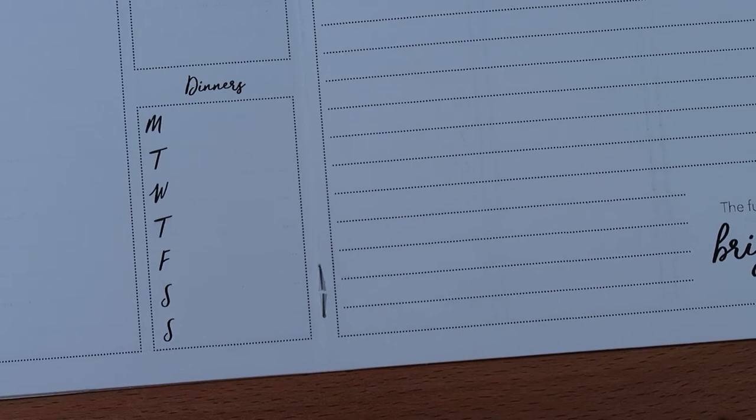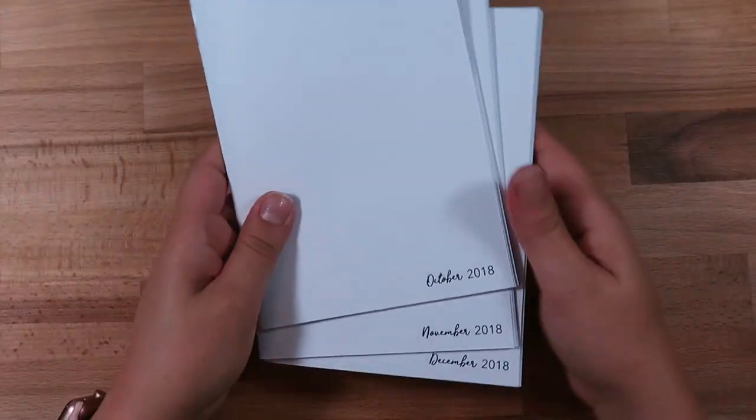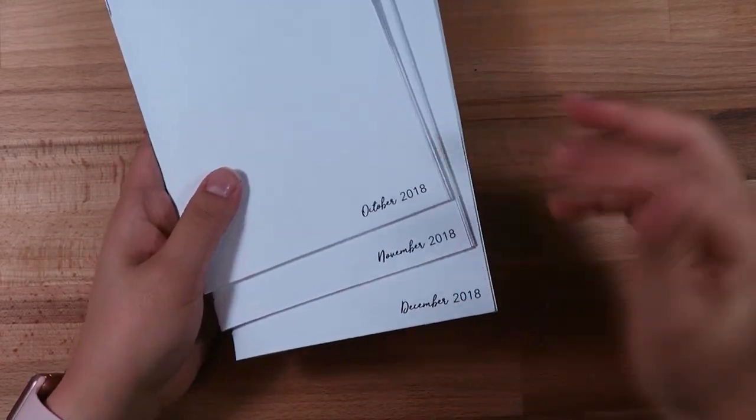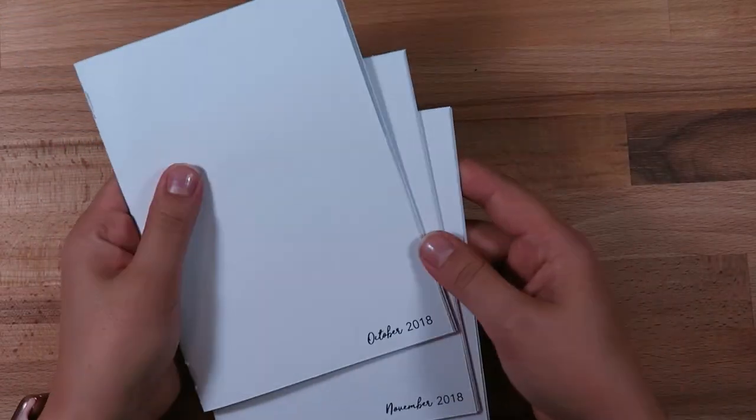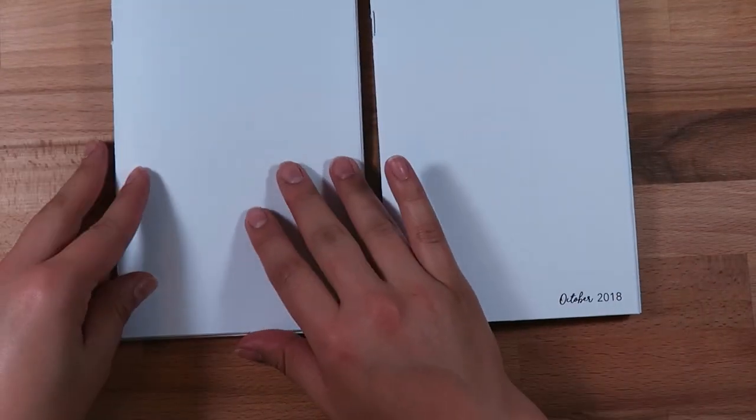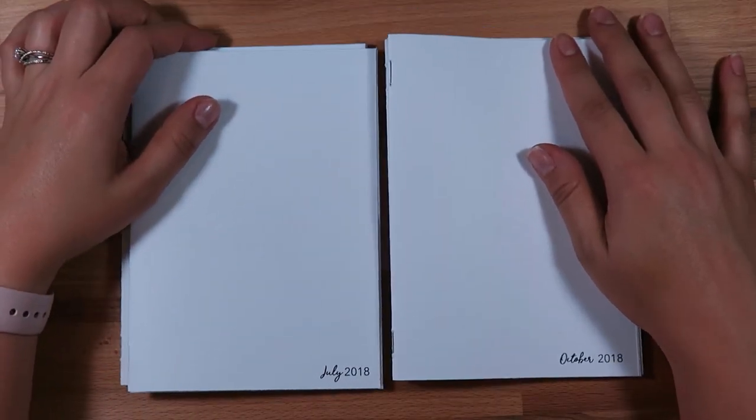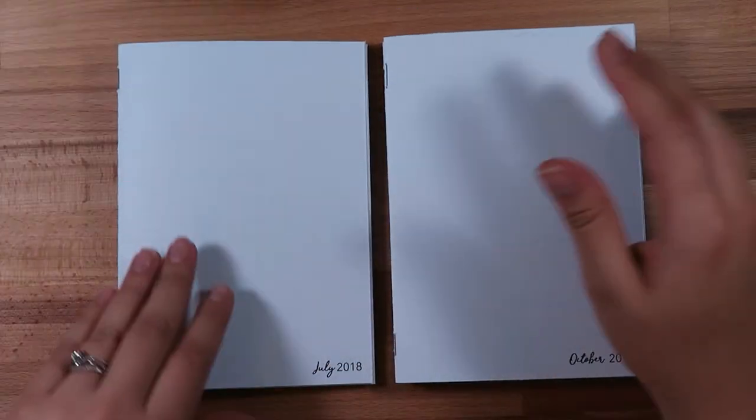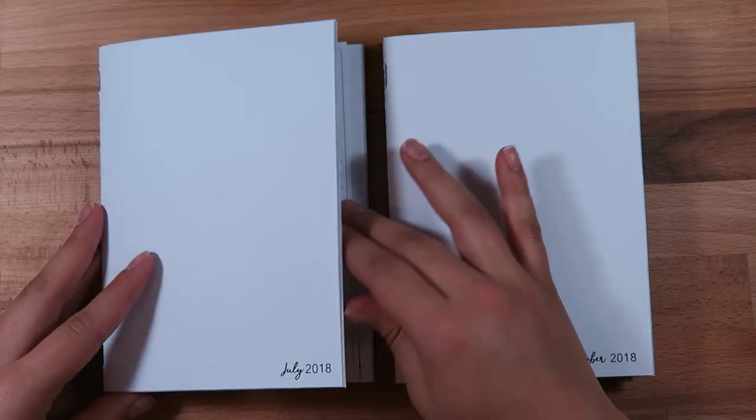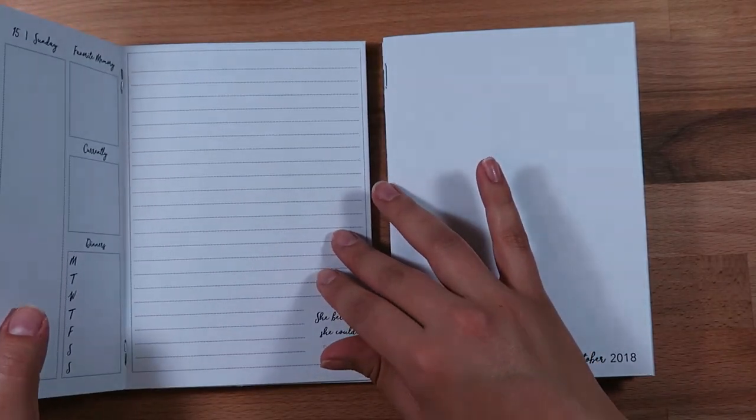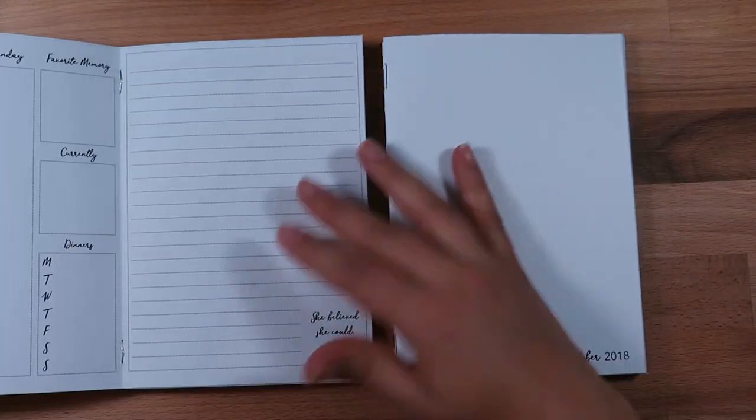Here is the second set. The second set will be October, November, December, again sold in threes. These are dated. The size for these is the six, and I tried to make them as simple and neutral as possible without too many frills.